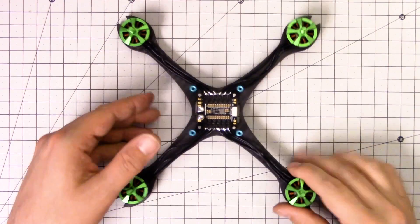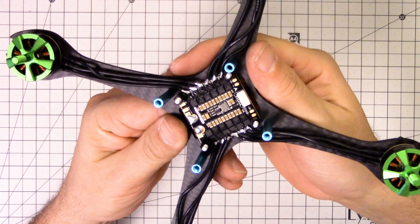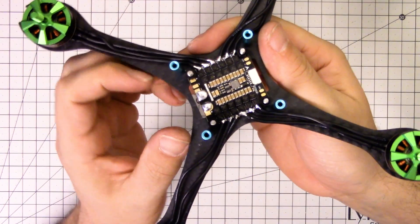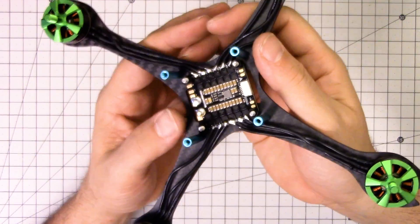And they're all soldered up. I'll give you a closer look at how that's gone. I always just solder them straight and then use BLHeli Suite to reverse the directions as need be after they're built.